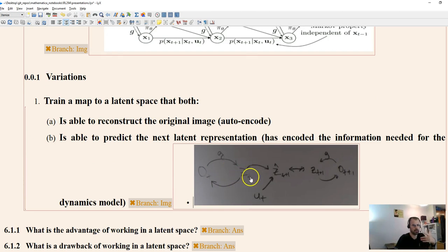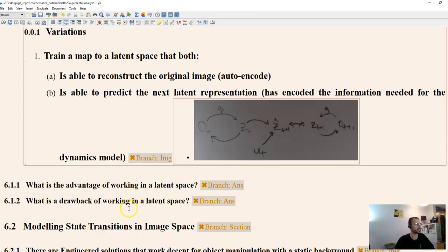So this is a depiction of that. Your autoencoder, your encoder learns to create some latent representation that you can use to get back your original image, but you can also use it to predict the next latent representation, which should be close to the actual latent representation. So you have some L-squared loss between these two.